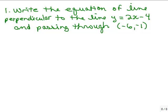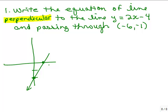Now I'm going to change this problem slightly. Write the equation of the line perpendicular to y equals 2x minus 4 and passing through negative 6, negative 1. So instead of parallel, what if we want the line that is perpendicular? The picture is the same rough sketch: the original line 2x minus 4 goes through, and we're looking for a line going through negative 6, negative 1. This time we want a perpendicular line, so the slope is going to be negative.